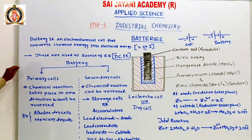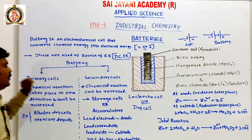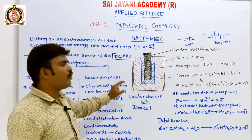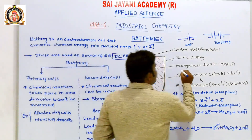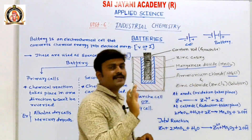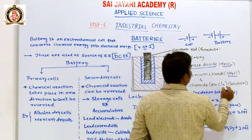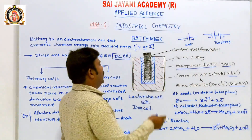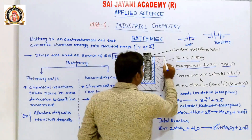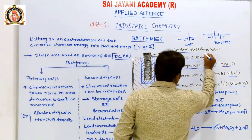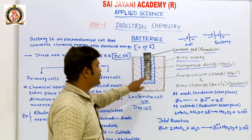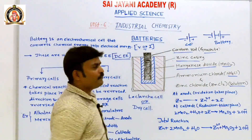Let us discuss the construction of primary cells. The best example of a primary cell is a Leclanché cell or dry cell. The construction consists of manganese dioxide (MnO₂) paste, ammonium chloride (NH₄Cl) paste, and zinc chloride (ZnCl₂) solution. This paste is enclosed in a zinc casing — the outer layer is the zinc casing. A carbon rod, usually graphite, is inserted at the center of the cell.